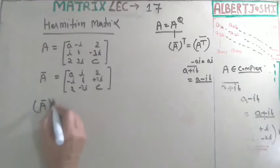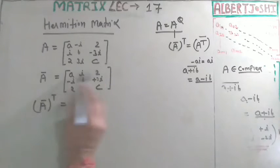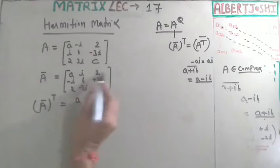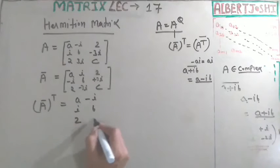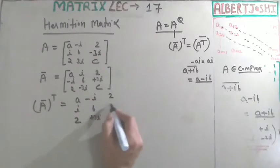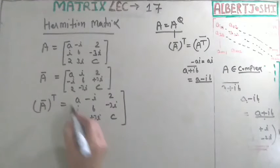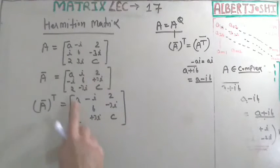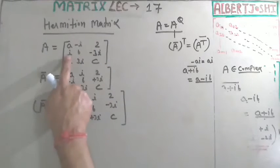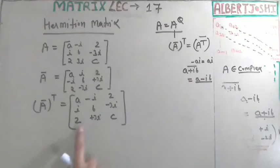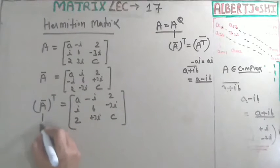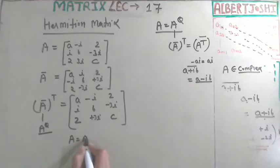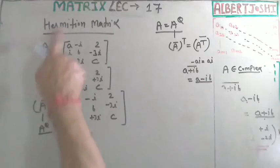After taking the conjugate, we transpose — converting rows to columns. The result is: a, minus i, 2; i, b, minus 3i; 2, plus 3i, c. Comparing this with the original matrix A, both are the same. So A equals A-theta, confirming this is a Hermitian matrix.